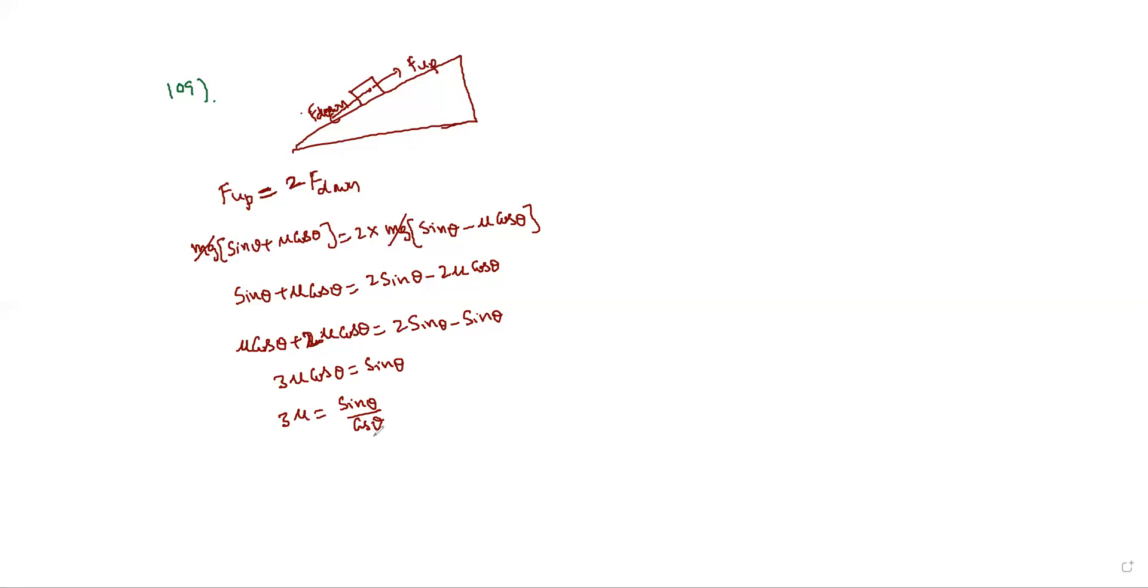3 into mu equals sin theta by cos theta. Now the mu value is 1 by root 3. Sin theta by cos theta equals 3 into 1 by root 3, which equals root 3. Then tan theta equals tan 60 degrees, so theta equals 60 degrees is the answer.